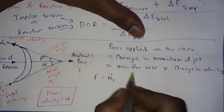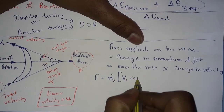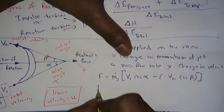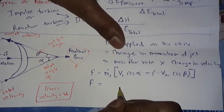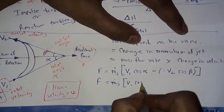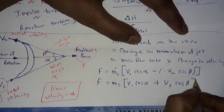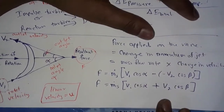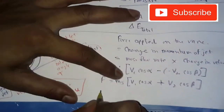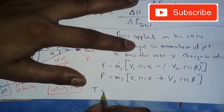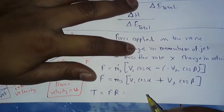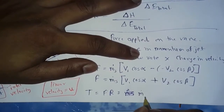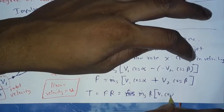So: F = ṁ (V1·cos α − V2·cos β), which simplifies to F = ṁ (V1·cos α + V2·cos β). This is the equation for force applied on the blade, equal to the change in momentum of the jet. Torque can be found as T = F × R, giving T = ṁ·R·(V1·cos α + V2·cos β).